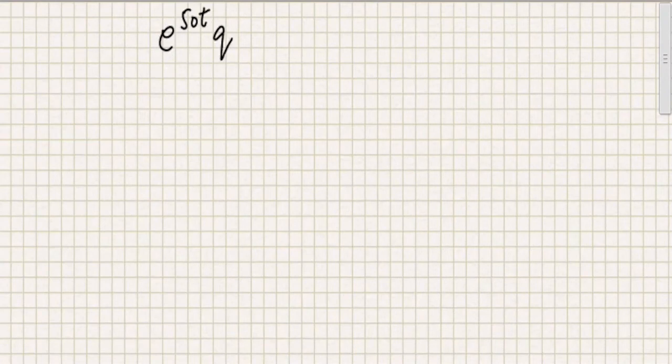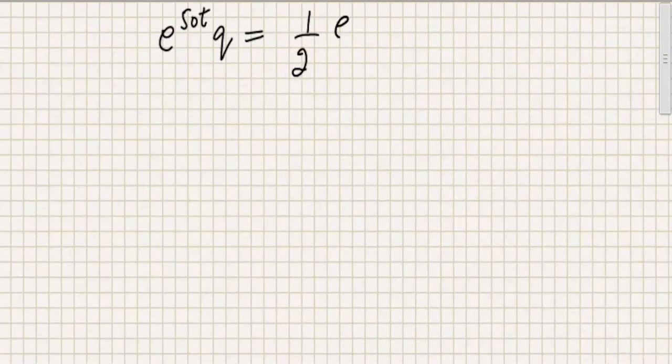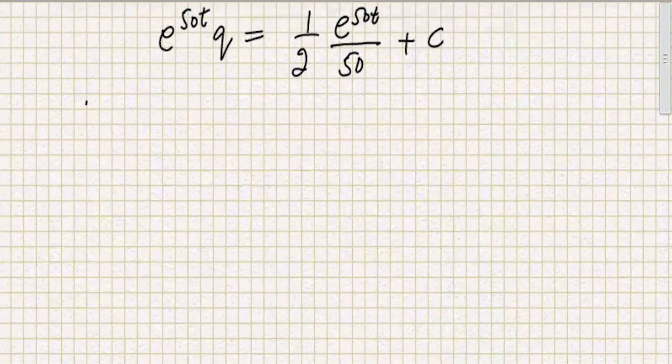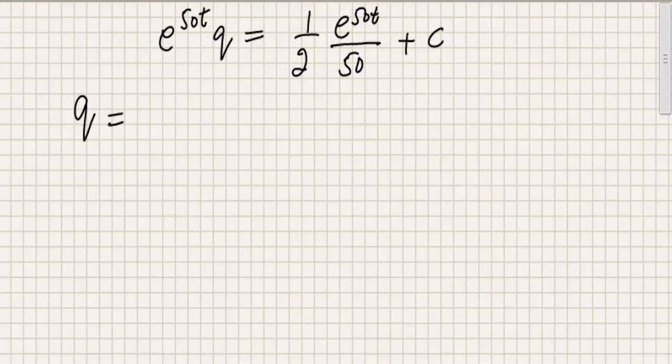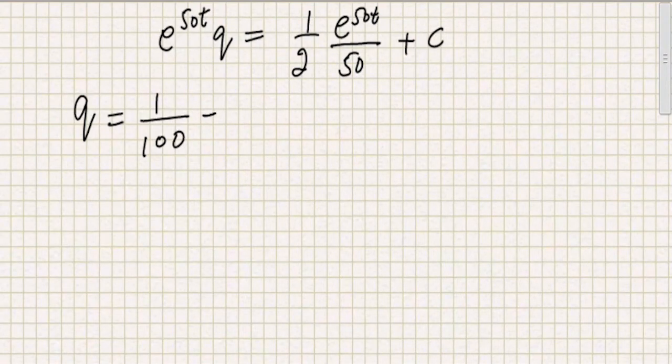So on the left hand side, we get e to the power 50T into Q. And on the right hand side, we get the integral of all of this. So I'm going to write down that over there. So we get 1 over 2 e to the power 50T divided by 50 plus C. So now I'm going to keep Q on the left hand side and I'm going to divide the rest of the equation with this factor. So 1 over 100 because 2 and 50 are being multiplied over here. This e to the power 50T will be cancelled with e to the power 50T. But on the second term, it will be reflected over here.